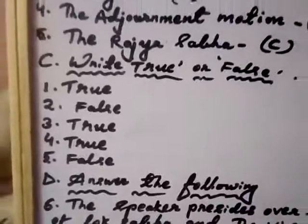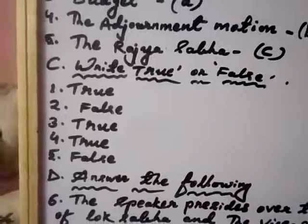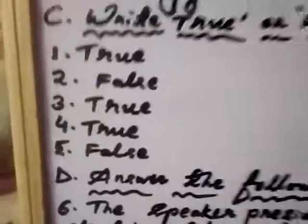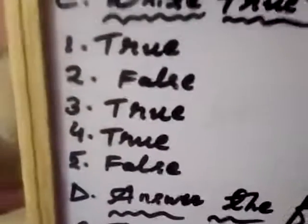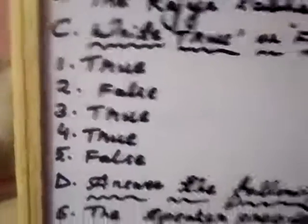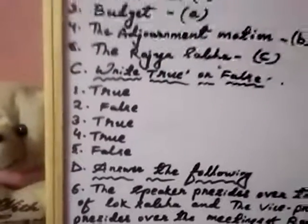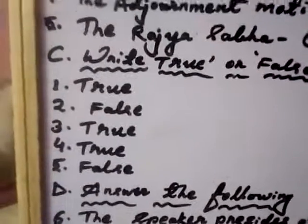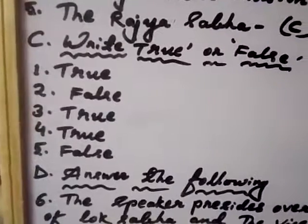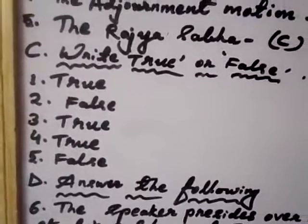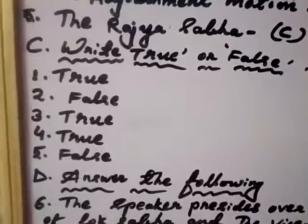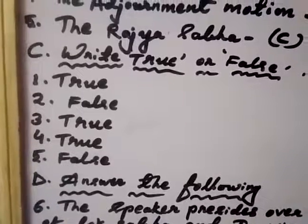True and false. The parliament has two houses — it is true. Number two, the speaker is the presiding officer of the Rajya Sabha — false. The vice president is the presiding officer of the Rajya Sabha. Number three, the maximum strength of the Lok Sabha is 552 — true. The members of the Rajya Sabha are indirectly elected — true. The ministers are jointly responsible for the house of the parliament — false. It is for the Lok Sabha.